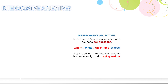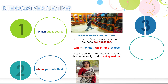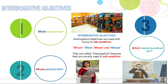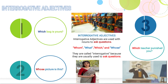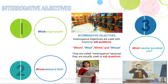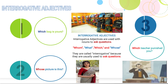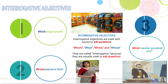Next is interrogative adjective. Interrogative adjectives are used with nouns to ask questions. Words like which, what, whose are called interrogative adjectives because they ask questions. Examples: 'Which bag is yours?' — which is before noun bag. 'Whose picture is this?' — whose is before noun picture. 'Which teacher punished you?' — which is before noun teacher. So which and whose are interrogative adjectives.